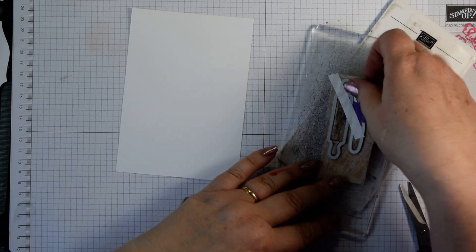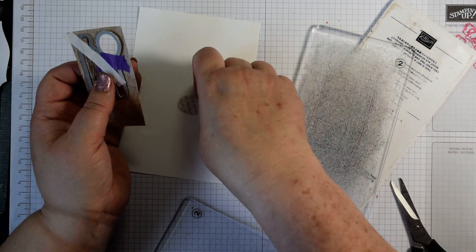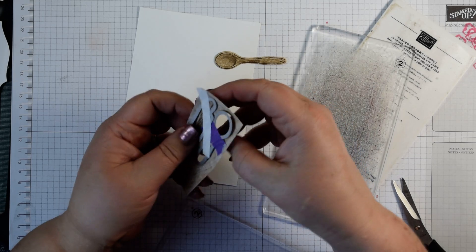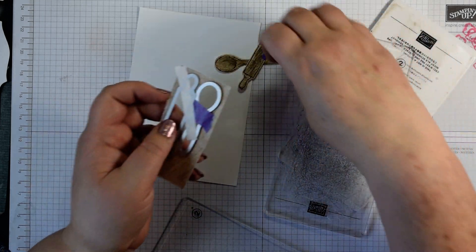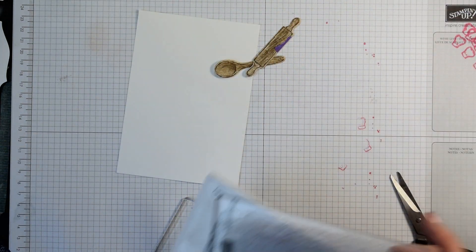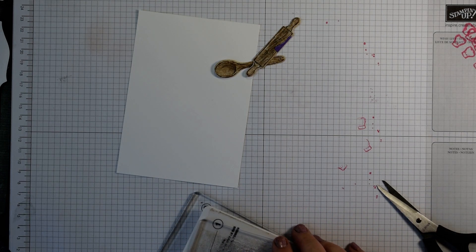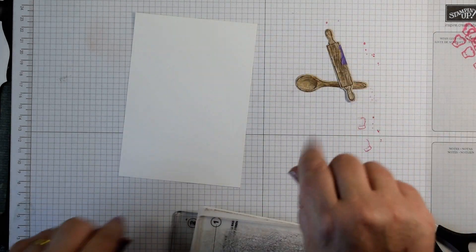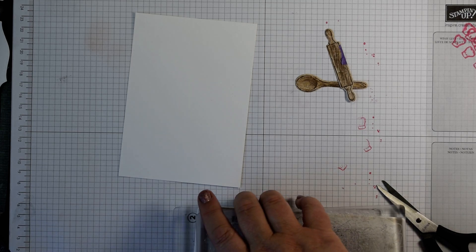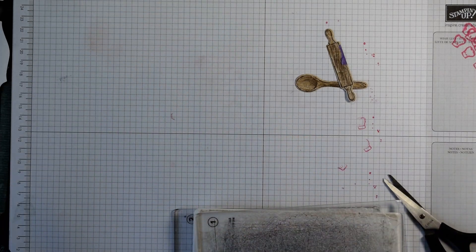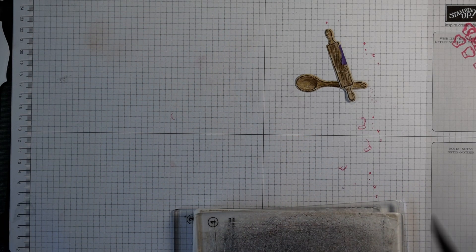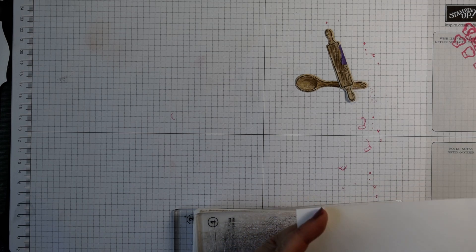There we go, our spoon and our rolling pin ready to go complete with a bit of my tape. Now I thought for the bowl this time we'd actually go for a pink bowl.